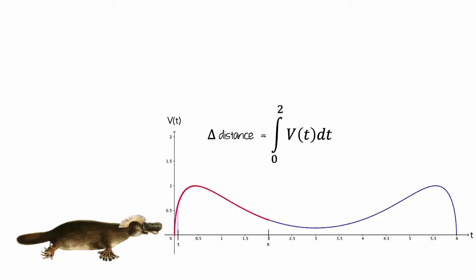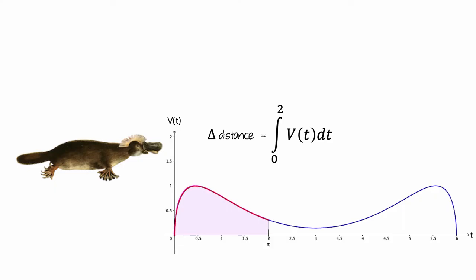And when we let the value of t increase from 0 to 2, then the value of this definite integral is represented by the area between the t-axis and the graph of the velocity function between t equals 0 and t equals 2.